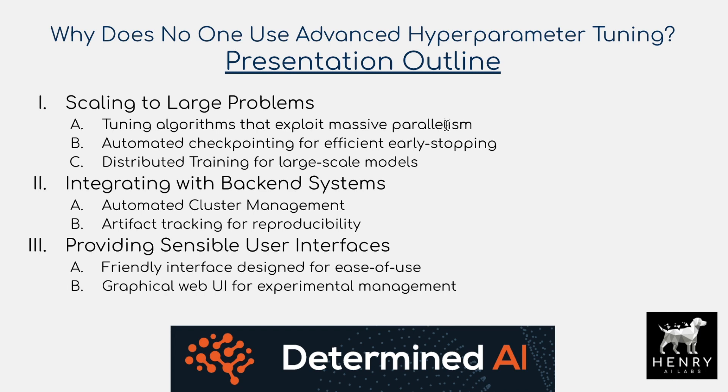Next is automated checkpointing for efficient early stopping — having this automated checkpointing where we can pause and resume training. We're doing non-uniform resource allocation with a criterion for continuing training on configurations that look promising. We need to pause and rerun without losing too much computation. And then distributed training for large-scale models, where we don't want to implement all the data sharding and communication between parameters ourselves, so we use Determined AI to take care of this.